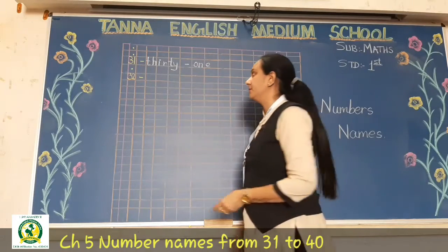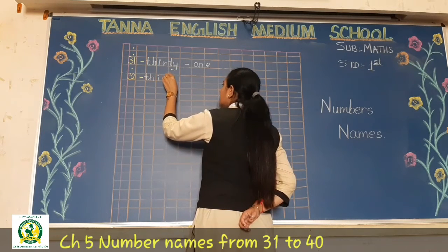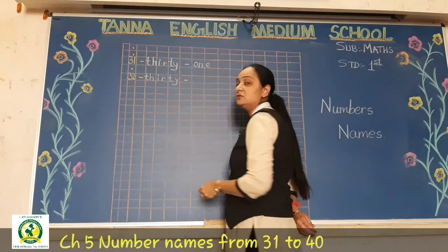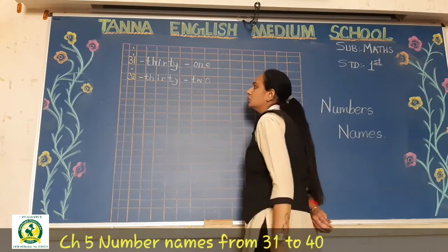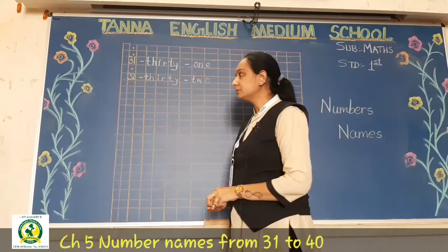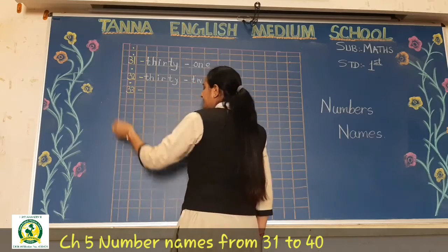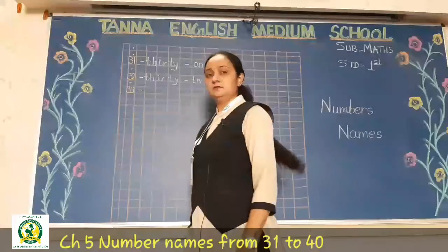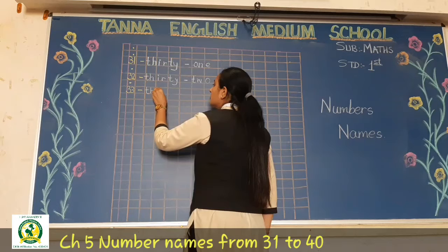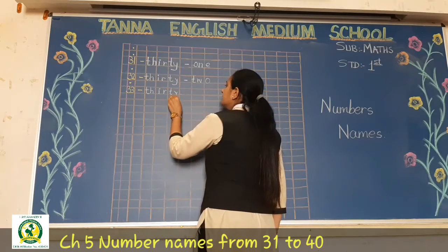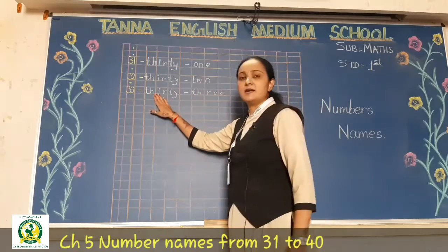For 32, write the spelling of 30 again — T-H-I-R-T-Y — then hyphen, then the spelling of 2: T-W-O. Return. Again one box leave, write 33 and hyphen. Return. Now write the number name of 33: T-H-I-R-T-Y, hyphen, T-H-R-E-E.